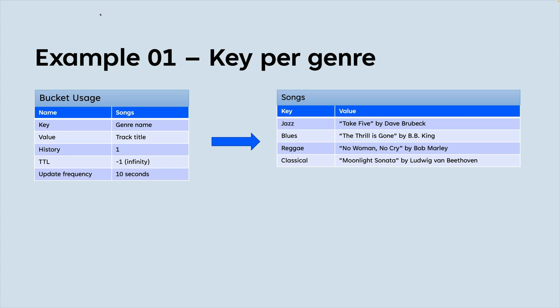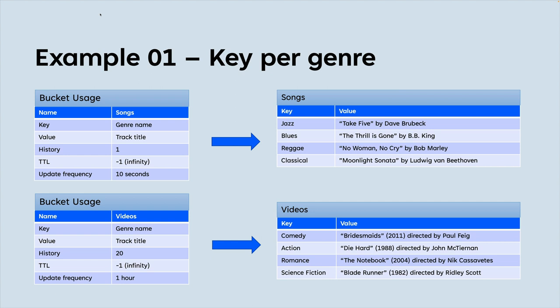This allows a client to say: I want to listen on this bucket, but only for when this specific key — the key for jazz — gets updated. If we had another bucket for video, again the key there would be the genre within videos or movies, and you would simply keep updating that same key. So anybody interested in comedy would be listening on the key 'comedy' within the bucket 'videos', and anybody interested in reggae would be listening on the key 'reggae' within the songs bucket, and they would see that key being updated. Let's jump to the command line and see the code for this first example.